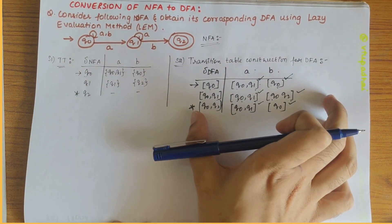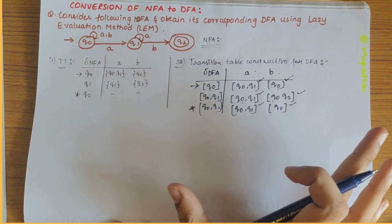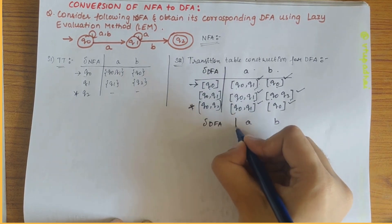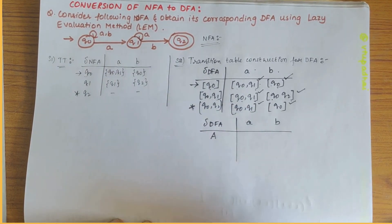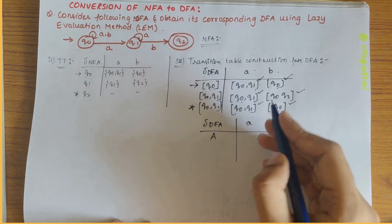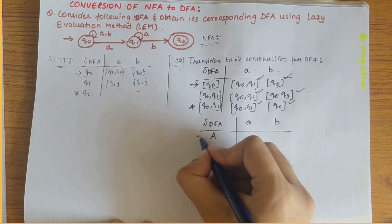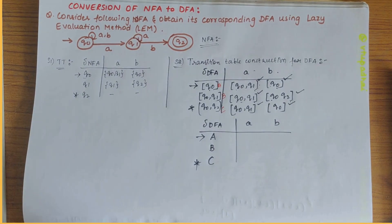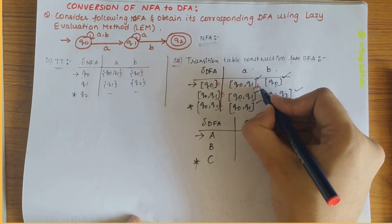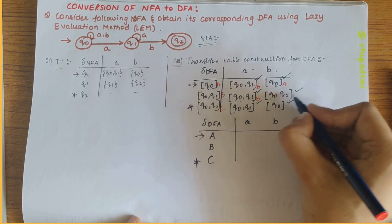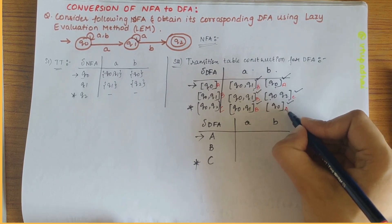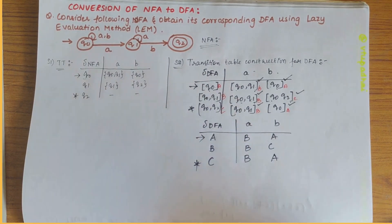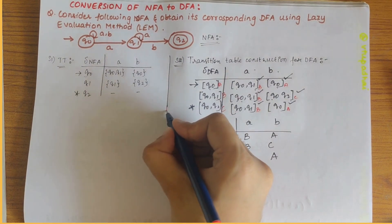We can either draw a transition diagram directly or rename the states for easier representation. I'll rename: q0 as A, {q0, q1} as B, and {q0, q2} as C. Rewriting the table: A on a gives B, A on b gives A; B on a gives B, B on b gives C; C on a gives B, C on b gives A.